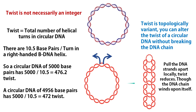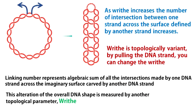Second, twist is not topologically invariant — meaning, without breaking the DNA chain, you can alter its twist. Simply pull the DNA chain from somewhere to locally separate the two strands; this will decrease the twist. But the double helix of the distant regions winds upon itself, meaning if you try to reduce the twist, the overall shape of the DNA molecule changes. Consider a planar circular DNA and try to locally separate the two strands.